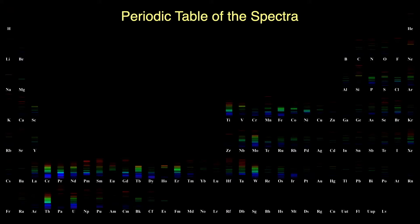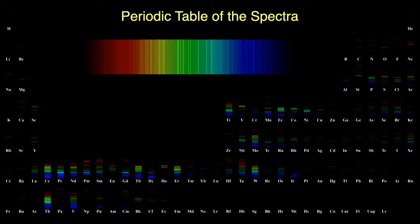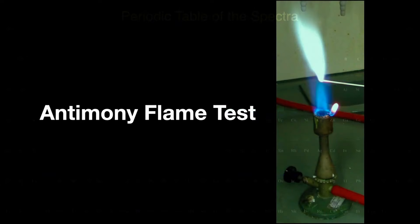From our periodic table of the spectra, we see that antimony displays a variety of emission lines across the spectrum. Though it's a bit hard to see here, the lines in the green are actually somewhat more intense. Putting a solution containing antimony into a flame displays a pale green color.